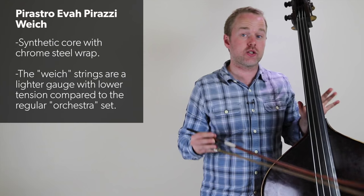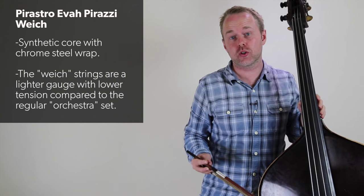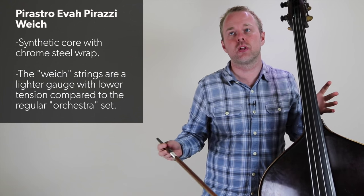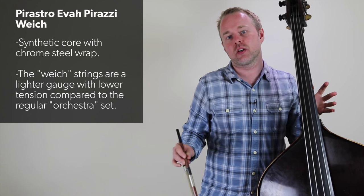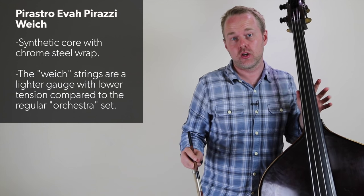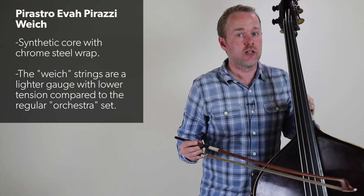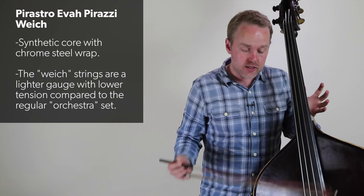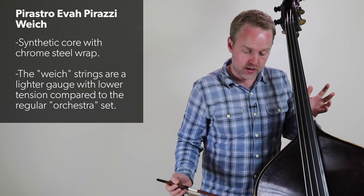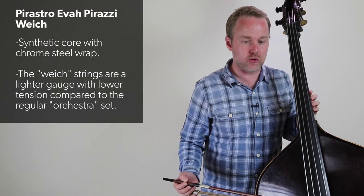I think if I was playing orchestral exclusively, I'd go for one of their orchestra brands such as Original Flat Chrome Steel, or maybe a string like Thomastik Belcanto. But as a hybrid string, they really are excellent. You know, they're easy to get started, you can get a nice sound from them, and they're fairly quick under the bow as well.